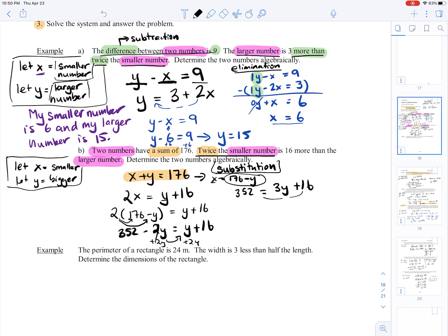Now I want to get rid of this 16, so I'm going to subtract 16 from both sides. So I get 352 minus 16 is 336 equals 3y. Then I'll divide by 3, so I get that y equals 112.